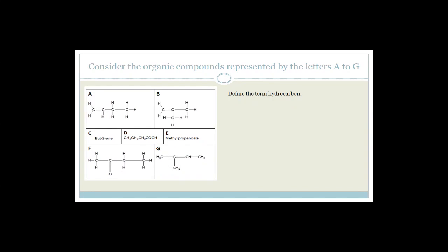Define the term hydrocarbon. A hydrocarbon is an organic compound made up of carbons and hydrogens only. Please get the exam guidelines — they list every definition you need to learn. Learn them word-perfectly, because approximately 10% of each paper consists of definitions.